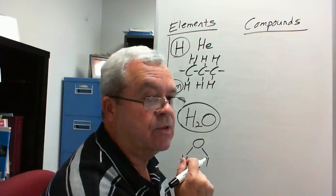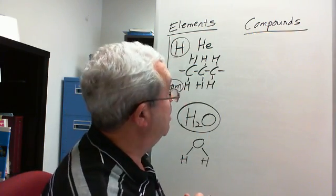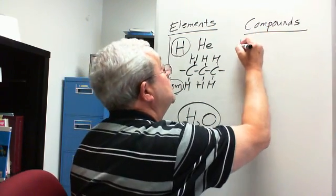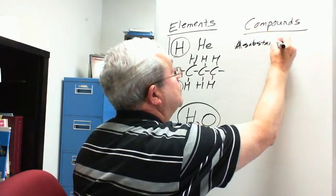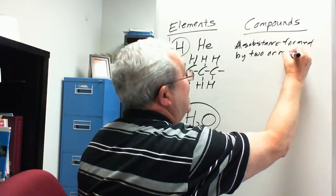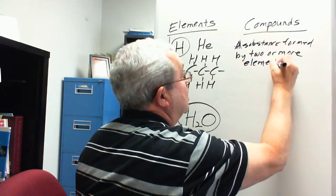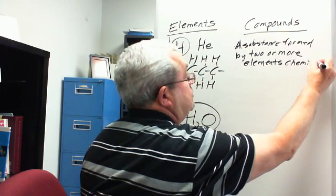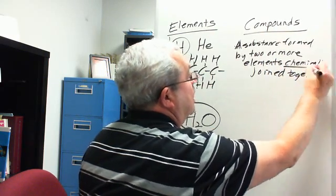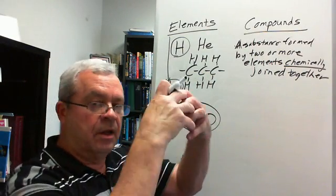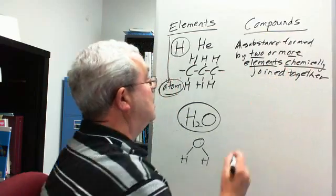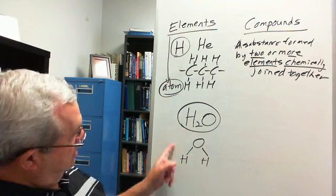A compound is a substance formed by two or more elements chemically joined together. Chemical bonds are formed — the elements are not just mixed together, they're chemically joined. In water, hydrogen is joined to oxygen: two or more elements chemically joined together.